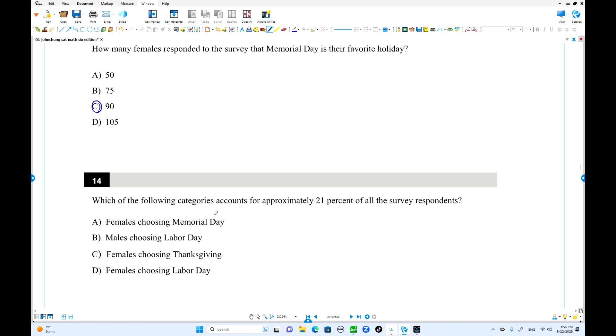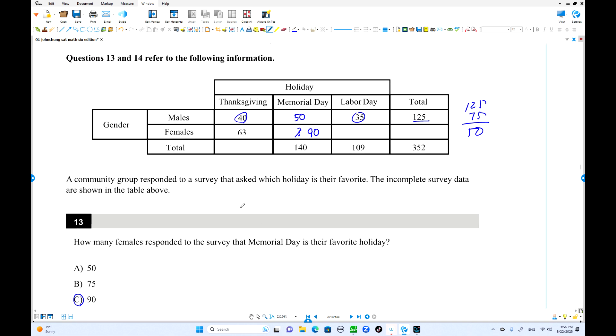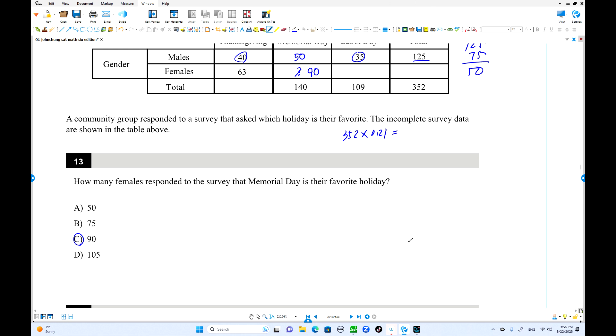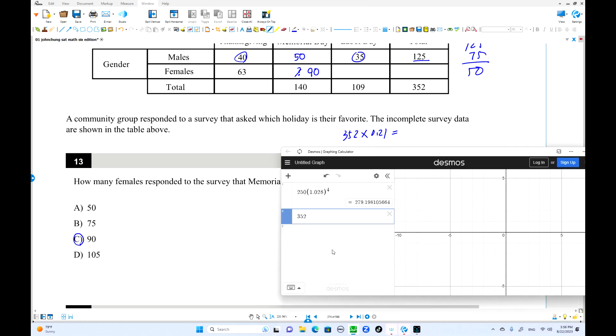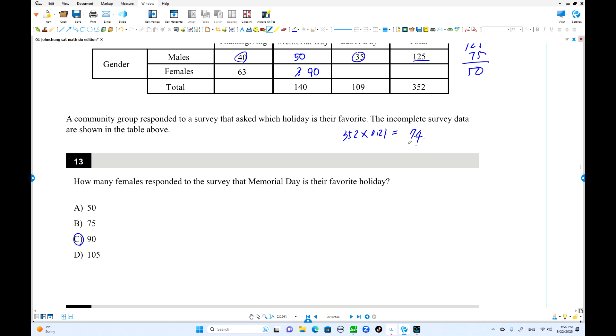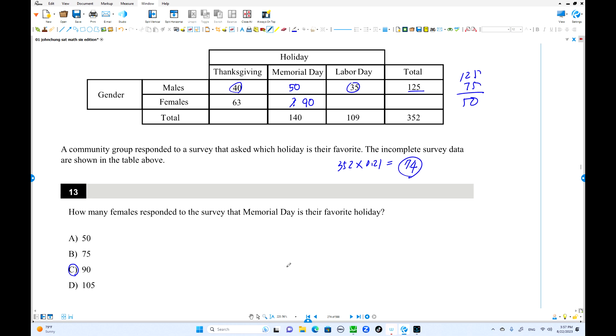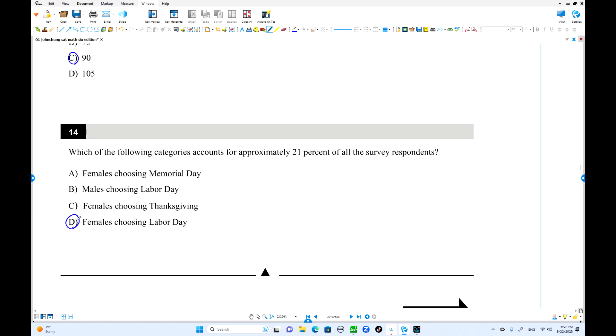The next one. Which of the following categories account for approximately 21% of survey respondents? Total number here, 352 times 21%. 21% times 0.21. Use your calculator. 352 times 0.21. You got 73 point and around 74. Which one has 74 people here? This is not 74. This is 103. This one is 109 minus 35. That is 74. So female's favorite holiday is Labor Day. Female choosing Labor Day is the answer. Choice C is the answer.